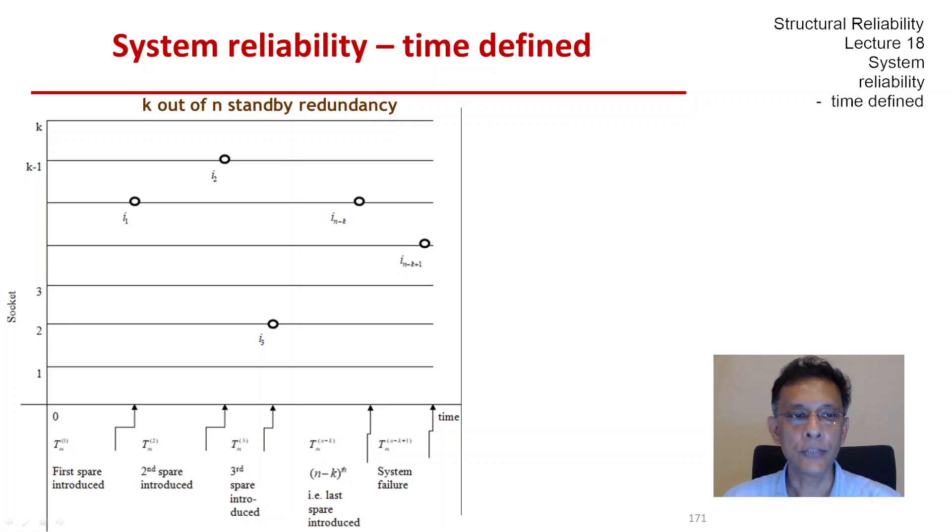The general layout of the standby architecture has k sockets numbered from 1 through k on the vertical axis, and the x-axis is the time axis where we indicate all the different times in which spares are introduced. The system is formed of k main units, all identical, and n minus k spares.